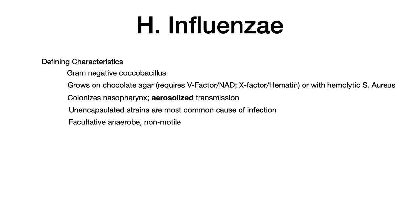H. influenzae's defining characteristics are that it is a gram-negative coccobacillus. It grows on chocolate agar, which is high-yield because examiners like you to know that in order for H. influenzae to grow, it requires hemolytic factors — specifically V factor (NAD) and X factor (hematin). You can either grow it on chocolate agar, or in the presence of Staph aureus, which being hemolytic will create those factors that H. influenzae needs to grow.